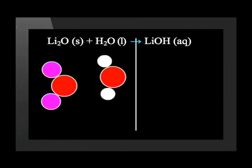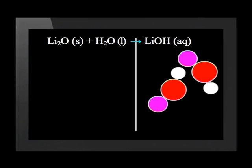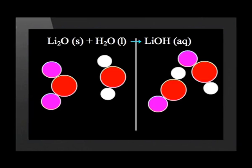We also need to include the phases of the substances. Lithium oxide is a solid and water is a liquid, so: Li₂O(s) reacts with H₂O(l) to form LiOH(aq). The AQ means that the substance is dissolved in water — it is in solution. Using CPK colored balls, the lithium oxide consists of two violet balls and one red ball, and a water molecule consists of one red ball and two white balls. After rearranging, one hydrogen atom and one lithium atom move to form two units of lithium hydroxide. We need to write a 2 in front of the lithium hydroxide to balance the equation.